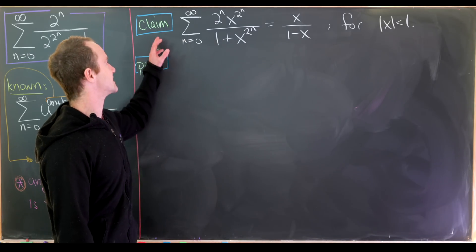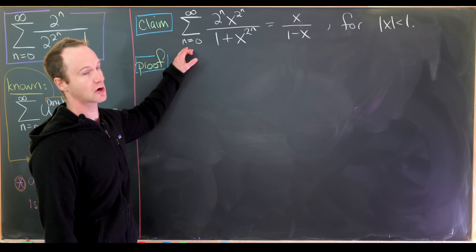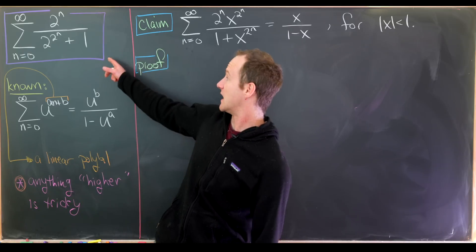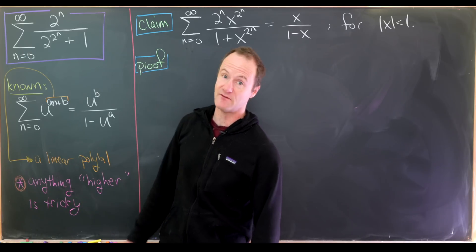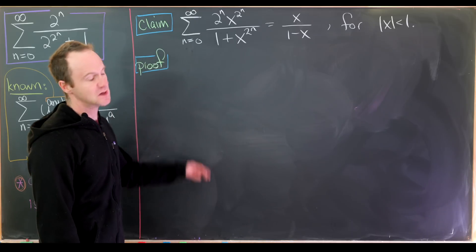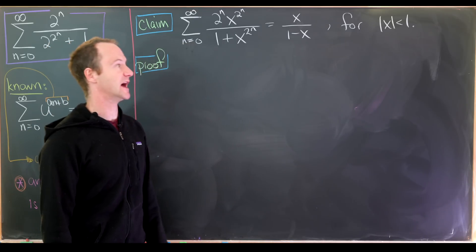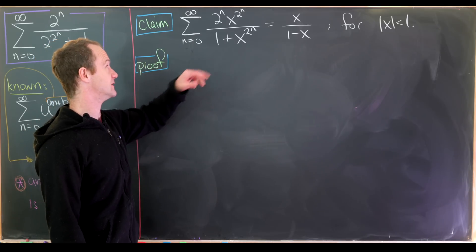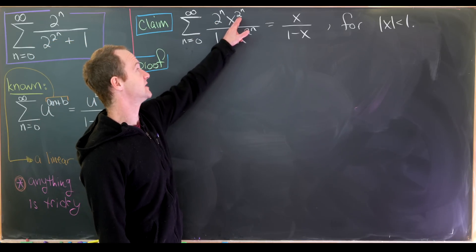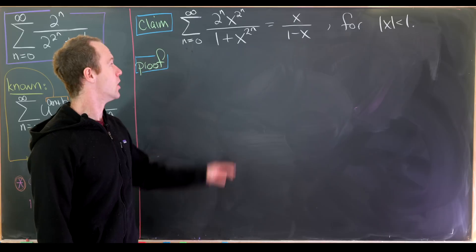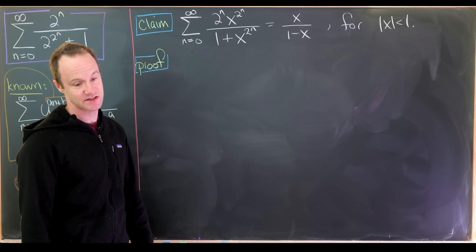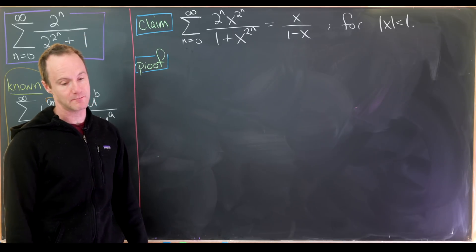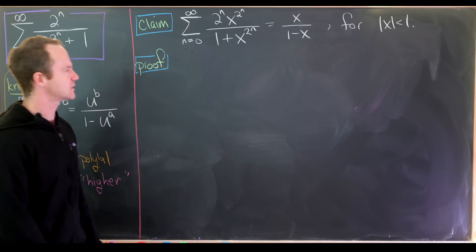What we'll do is actually prove a stronger claim, and this stronger claim will specialize to find the value of this quite easily. We'll show that for absolute value of x less than 1, the sum as n goes from 0 to infinity of 2 to the n times x to the 2 to the n over 1 plus x to the 2 to the n is equal to x over 1 minus x. Okay, let's get going.